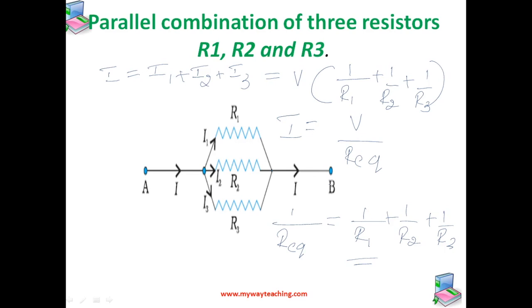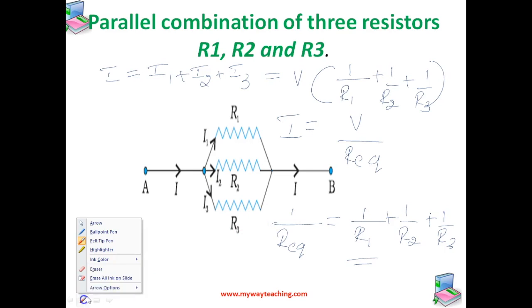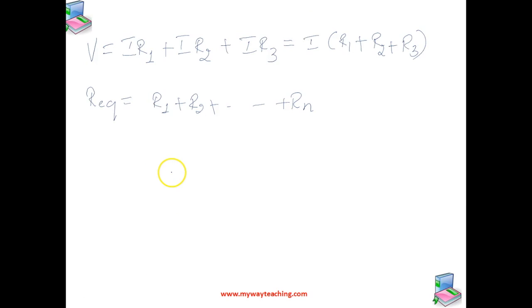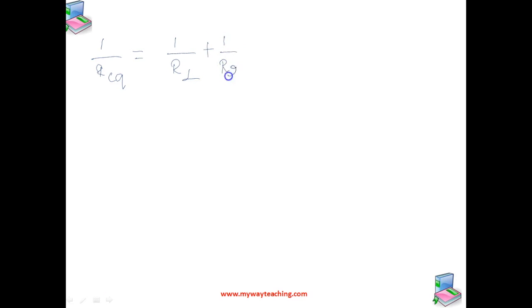This formula can be extended for N resistances connected in parallel. In that case, the equivalent resistance is given by 1/R_equivalent = 1/R1 + 1/R2 + ... + 1/Rn. This is the equivalent resistance for the combination of N resistors connected in parallel.